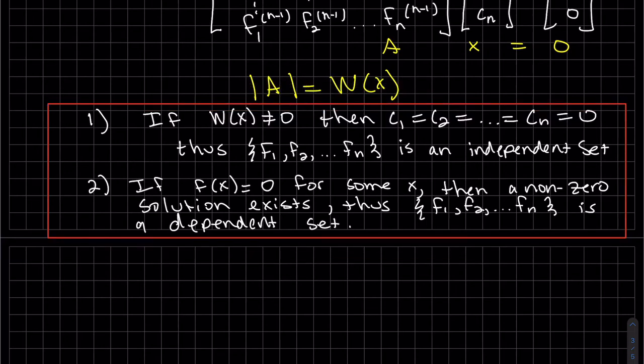So this leaves us with this result. If the Wronskian is not zero, then all the constants are zero. Thus, the set is an independent set. If the Wronskian is zero for some x, then a non-zero solution exists. Thus, the set is a dependent set. Let's look at some examples.